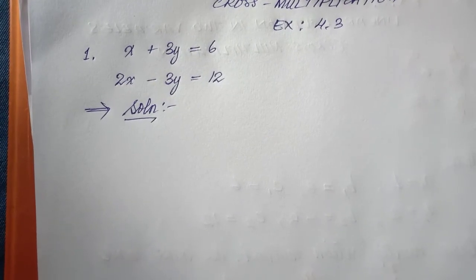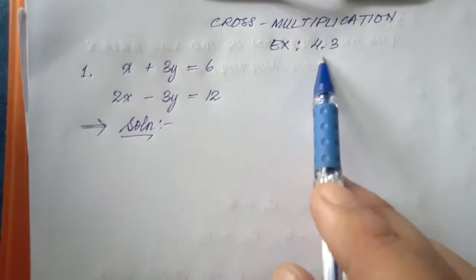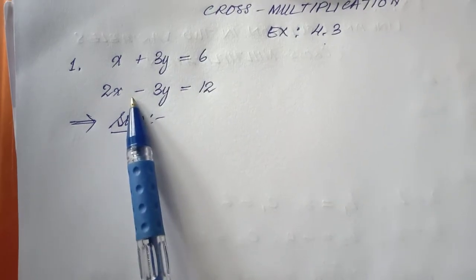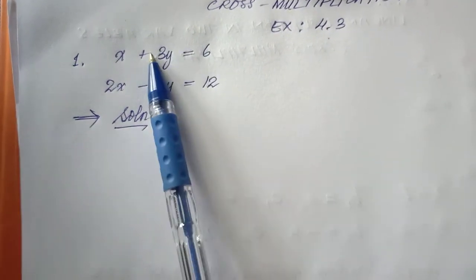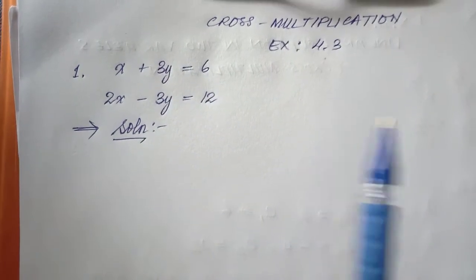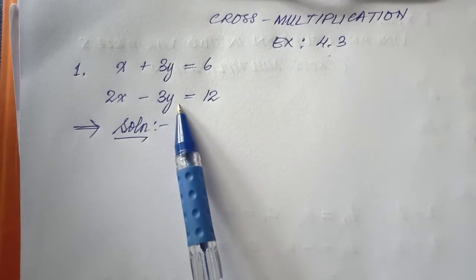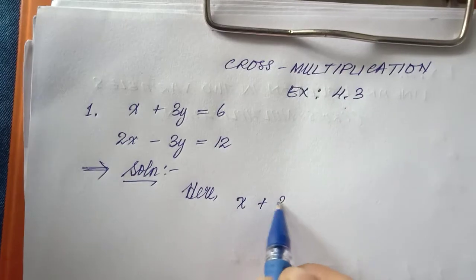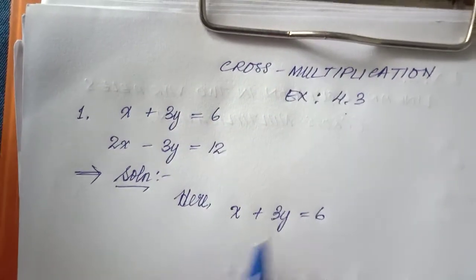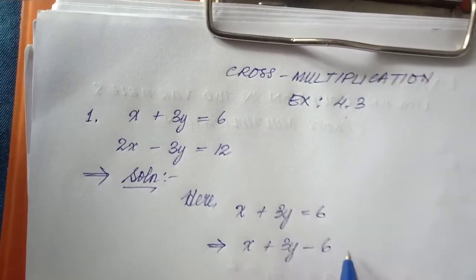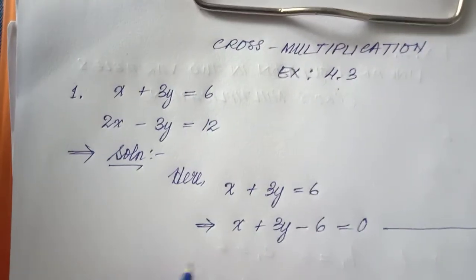In cross multiplication, we cannot simply calculate like the substitution method — we have to follow specific steps. Be careful: this equation is not in the correct form for cross multiplication. The constant term must always be at the left hand side, and there must always be zero at the right hand side. So I have to rearrange. For equation one: x plus 3y equals 6 becomes x plus 3y minus 6 equals zero — this is equation one.